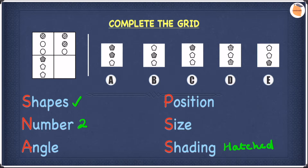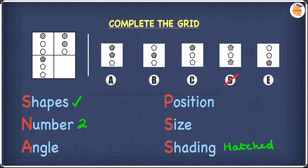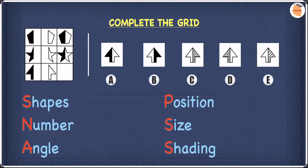For this example we must have two of the same hatched patterns. Out of A, B, C, D, and E, we can straight away remove D because it has a spotted pattern. Out of the remaining A, B, C, and E, only A has two hatched pentagons, so our answer to this question is A.